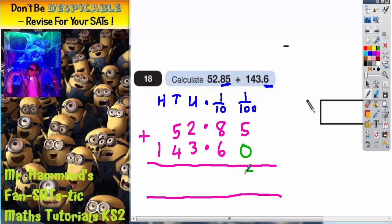So five plus zero is five. Eight plus six is 14. Put your four in, carry your one. Two plus three is five. Plus that one is six. Five plus four is nine. And one plus nothing here is one.